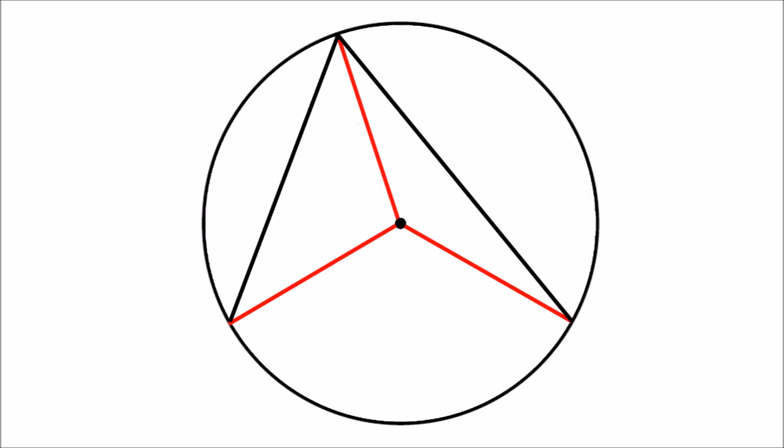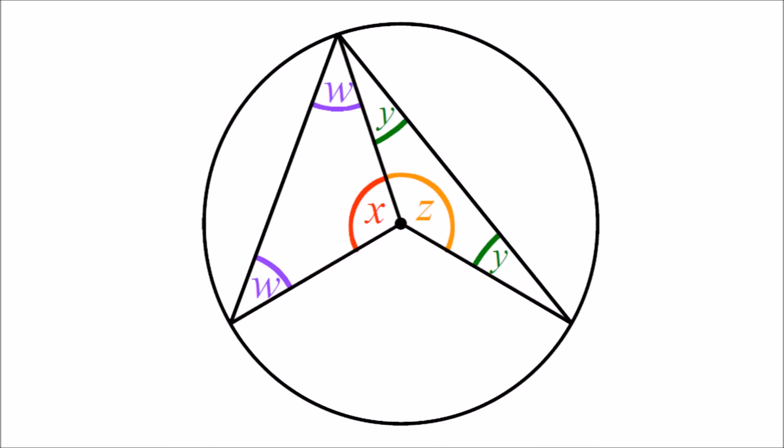Because each small triangle is an isosceles triangle, they must each have two equal angles, the two angles not at the centre. We have labelled these w and y, with the angles at the centre x and z.